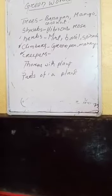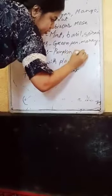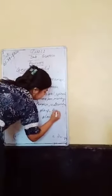Next is creepers. Some plants with weak stems run along the ground — they are called creepers. Examples of creepers are pumpkin and watermelon. Some plants also have thorns on their body, for example rose, cactus, and lemon.